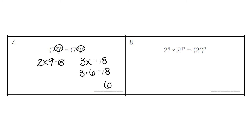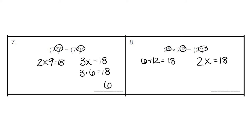In number 8, we have our base numbers, 2, that are being multiplied, so we would add the exponents: 6 plus 12, which would give us 18. On the other side, we would be multiplying those exponents. So 2 times what would also give us that same exponent answer, 18? We know that 2 times 9 gives us 18, so 9 is our missing exponent.